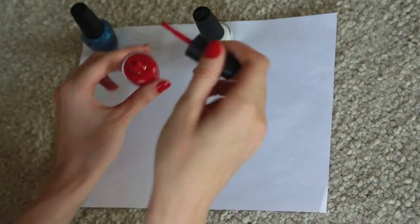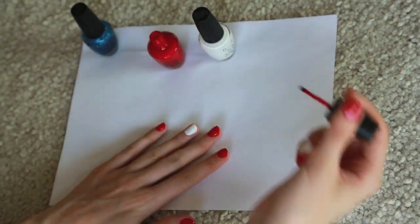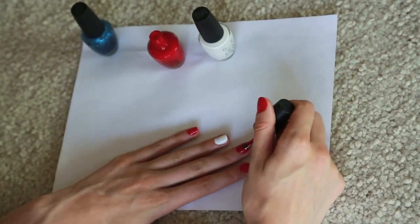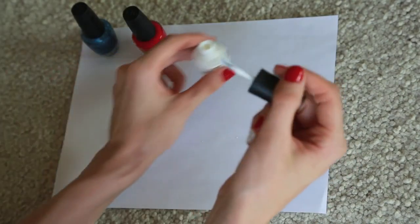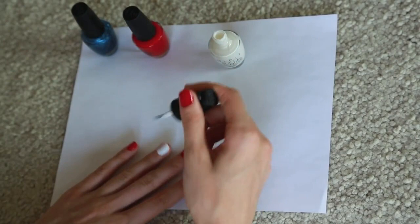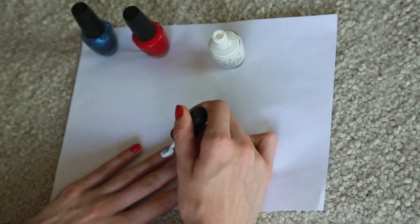Once you've chosen what orders you want the colors in, you can start painting your nails. I'm using red to start off with. Next you can paint your accent nail. I'm using white as a background for this, and I'm going to do it on my ring finger.